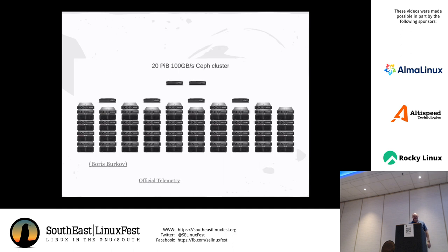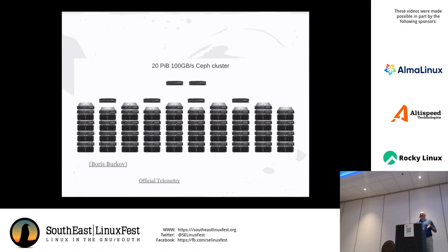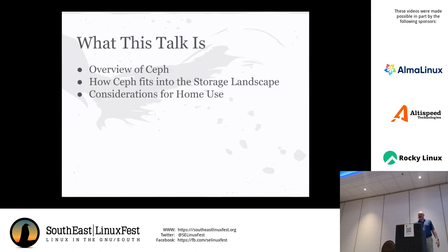This is probably the best picture of a Ceph cluster I could find on the internet - people don't tend to publish photos of their Ceph clusters in production. This one is apparently 20 petabytes, 100 gigabytes per second. This is the sort of thing that Ceph was designed to do - you'll find it at places like CERN and other really large installations.